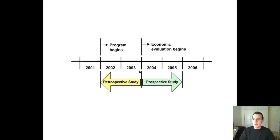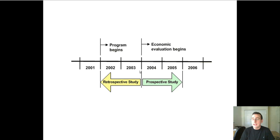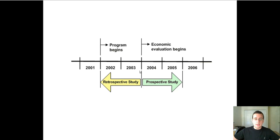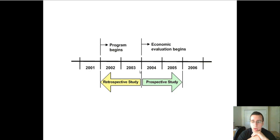Whichever way you look at it, both are valid ways of collecting information. When doing retrospective studies, you're limited in that you can't collect any new data points — only what's already been collected. In prospective studies, you can decide ahead of time what data you want and make sure you're collecting everything you need. But retrospective studies are useful to expand the amount of data available to see the phenomena you're trying to study.